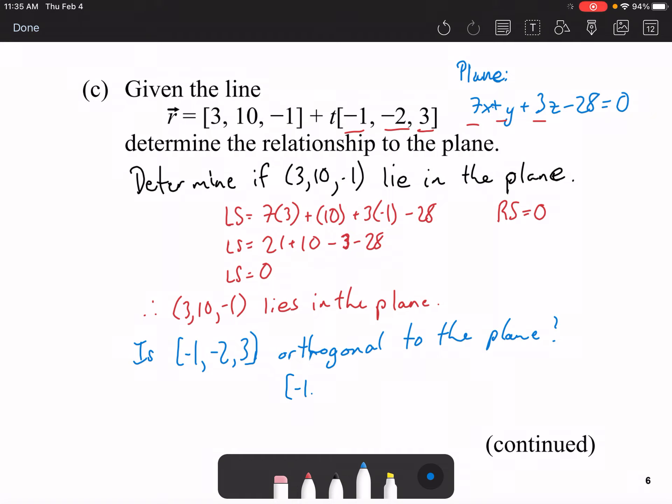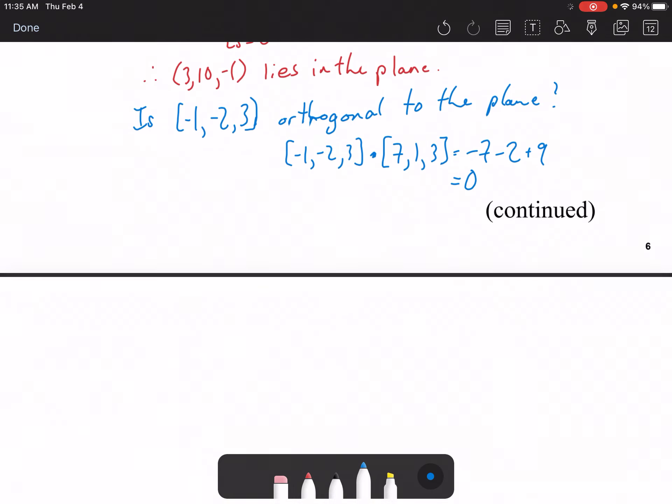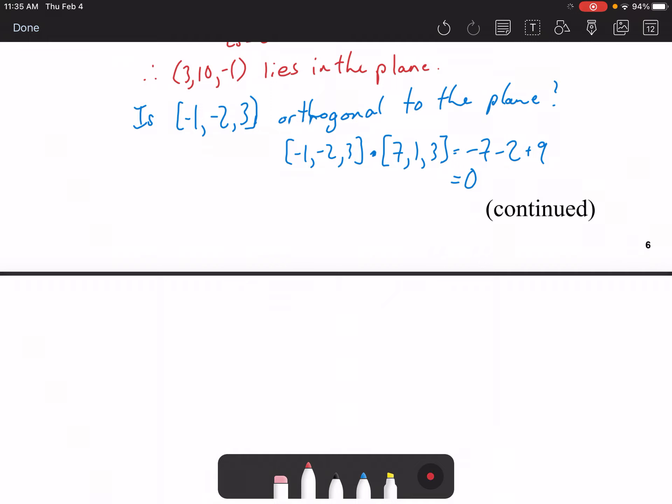And how we can check that is dot product. So, I'm going to take the two directions. And I'm going to dot them with each other. So, negative 1 times 7 is negative 7. Negative 2 times 1 is negative 2. 3 times 3 is 9. This equals 0. So, here we see, therefore, the vector negative 1, negative 2, 3 is parallel to the plane.